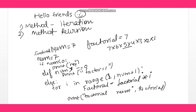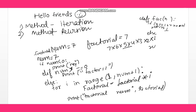Now the second method: the recursion method. We define a recursive function using def factorial(n). Inside, we check: if n == 1 or n == 0, we return 1. Otherwise, we return n * factorial(n - 1). That is the recursive definition.